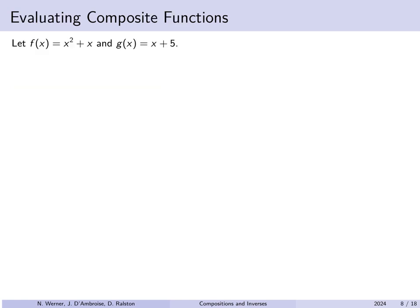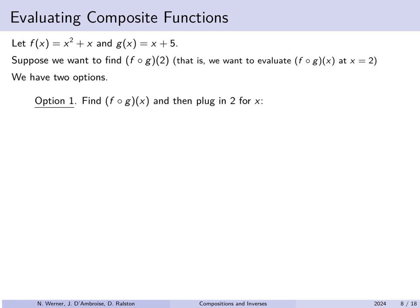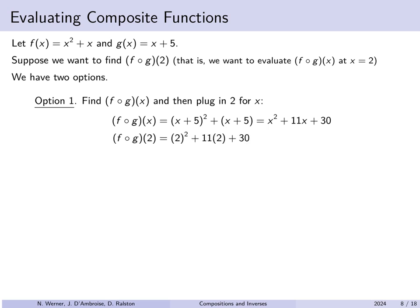Let's evaluate some composite functions. Given f(x) is x squared plus x and g(x) is x plus 5, we want to find f(g(2)). One approach: find a general expression for f(g(x)) first. Taking g(x) equals x plus 5 and plugging into f gives (x plus 5) squared plus (x plus 5), which expands to x squared plus 11x plus 30. Plugging in x equals 2 gives 56.